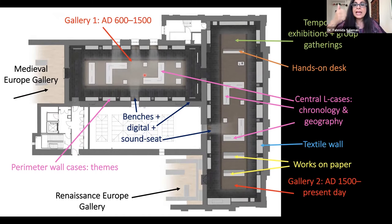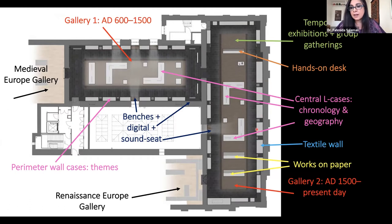The L-shaped cases in the middle focused on chronology and geography, so every visitor knew where they were in the world and what period of time — something teachers specifically asked for. Other visitors wanted bite-size information and themes, so thematic displays were created along the perimeters of the walls. There was an entire wall of textiles, works on paper — calligraphies, paintings, drawings — that needed rotating out every six months, and a substantial section for contemporary art as well.